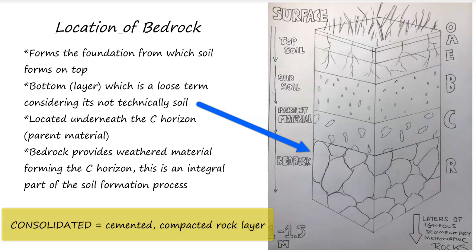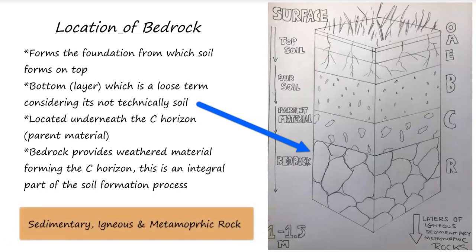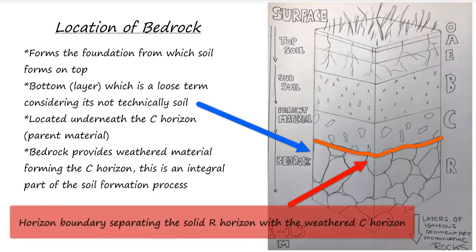This R horizon could be a layer of igneous, sedimentary, or metamorphic rock in one area, or it could be a continuous slab of just sedimentary rock, which is generally the most common because most of the Earth's surface — about 75% — is sedimentary rock. You also get areas of igneous rock, whether intrusive or extrusive, or areas where orogeny has occurred in mountainous regions and metamorphic rock is exposed on the surface, forming the baseline or foundation of the soil.